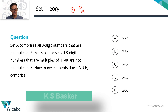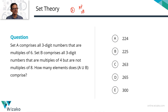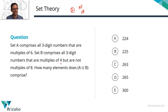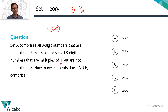Set A comprises all three-digit numbers that are multiples of six. Set B comprises all three-digit numbers that are multiples of four, but are not multiples of eight. That twist makes this question an interesting one. What we need to find out is how many elements does A union B comprise — essentially, N(A∪B).